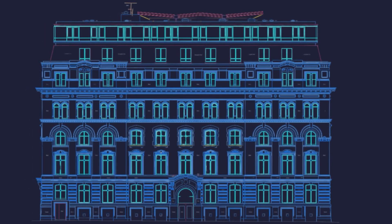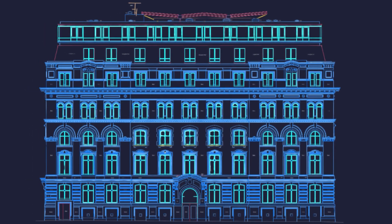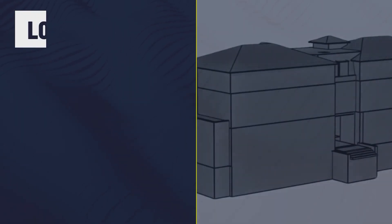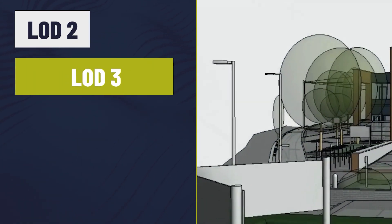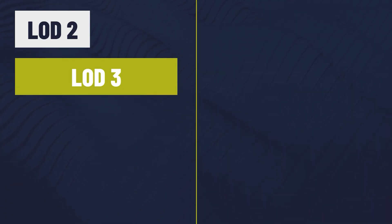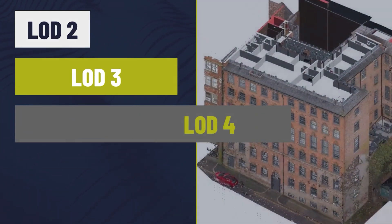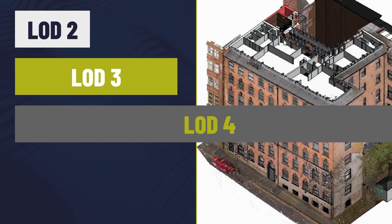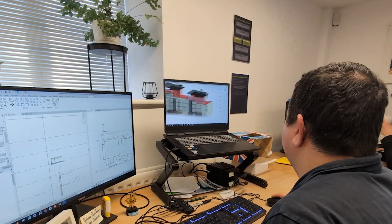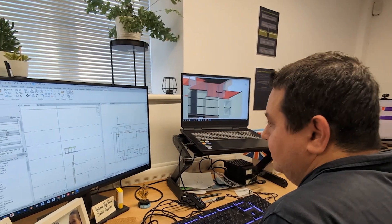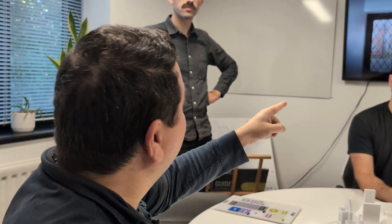Additional deliverables can include 2D CAD exports from the model, and views can also be generated within the Revit file. Understanding timescales is crucial: a highly detailed LOD4 model of a building can take several weeks, and for a large building, several months — it all depends on the size. A good surveyor will provide realistic timescales based on the complexity of the project and can make suggestions on where to gain efficiency, saving you time and budget and potentially shortening your programme.